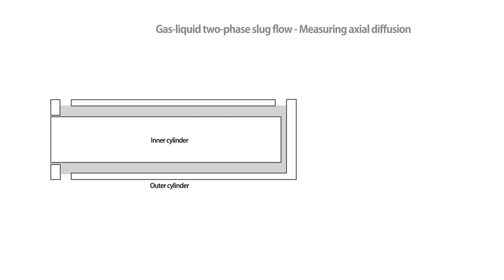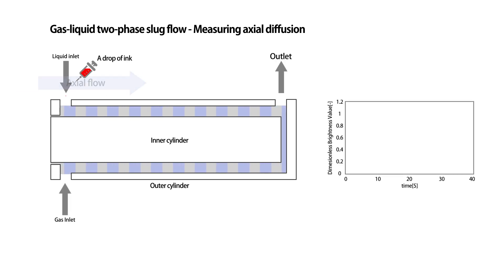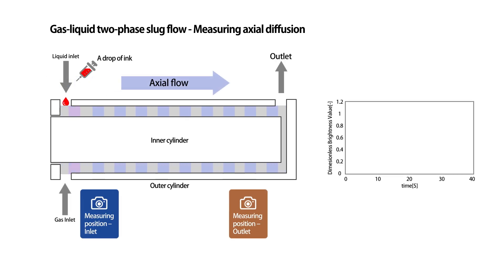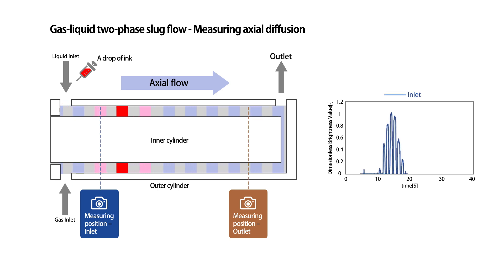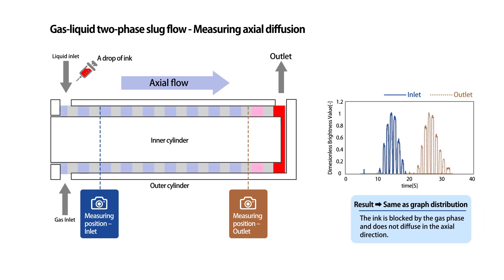An experiment was conducted to confirm the effect of gas-liquid slug flow on preventing axial diffusion. A drop of ink was placed in the liquid phase, and the ink concentration and brightness were measured at two locations near the inlet and outlet. Both measurement points show almost the same graph curve, and the ink concentration remains unchanged even as the vortex moves toward the outlet. This indicates the ink does not diffuse in the axial direction, thanks to the gas phase separation.